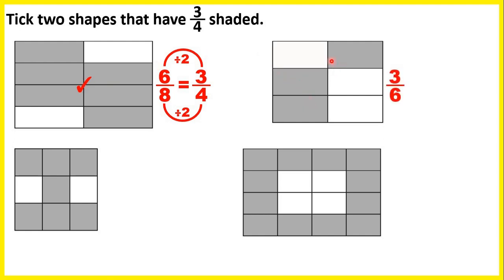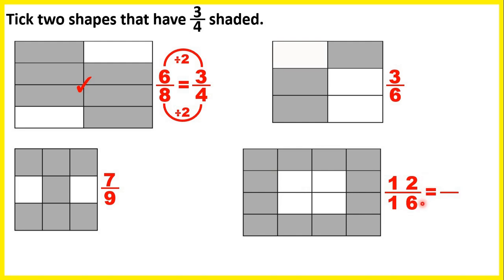Here we have 3 parts shaded and 6 parts altogether, but 3 sixths is not the same as 3 quarters. And here we have 7 out of 9 parts shaded, but we can't simplify 7 ninths to 3 quarters. Now here we have 12 parts shaded and 16 parts in total. 12 over 16 can be simplified because 12 and 16 are both in the 4 times table. Dividing both numerator and denominator by 4 gives us 3 quarters. So we can tick this shape — 12 sixteenths is the same as 3 quarters.